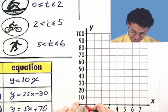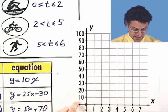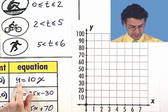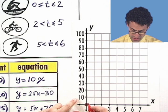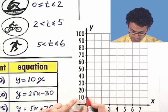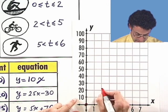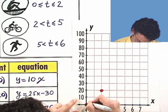So we start at 0, 0. And then we graph the line y equals 10x. So that's going to have a slope of 10 over 1. So I go 10 up, 1 over, 10 up, 1 over. And I get right to here. Connect them.